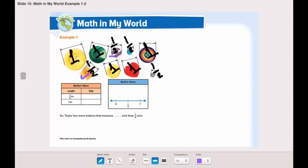Now let's count how many buttons are near to half inch to put them in our tally chart. One, two, three, four. So we will put four tally marks. Now how many buttons are near to one inch? One, two, three, four, five. So we will put five tally marks.